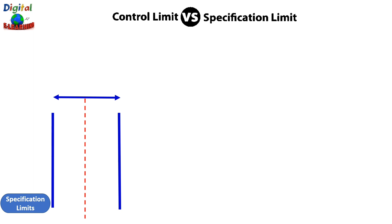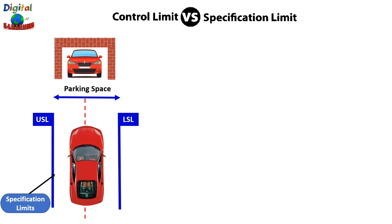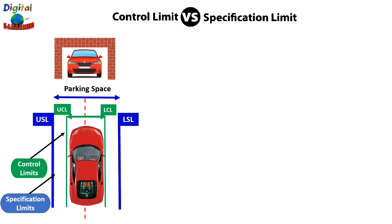Think of the walls of a garage as your specification limits, which are defined by the customer. If your control limits fall within the specification limits, it does not matter if you park the car in the middle — it will always fit and you have plenty of room on either side. This is one of the reasons the Six Sigma philosophy focuses on removing variation in the process. This is probably the best design a process can have.